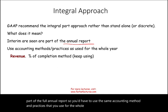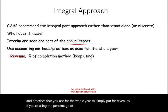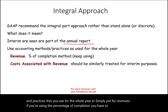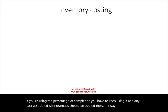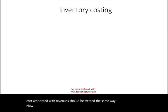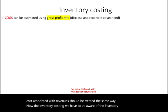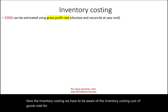You have to use the same accounting methods and practices that you use for the whole year. For revenues, if you're using the percentage of completion method, you have to keep using it, and any cost associated with revenues should be treated the same way. For inventory costing, cost of goods sold for interim reporting can be estimated using the gross profit method.